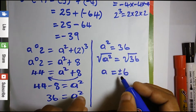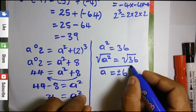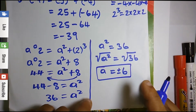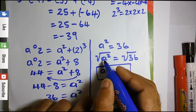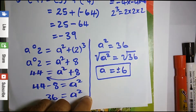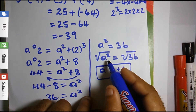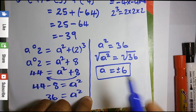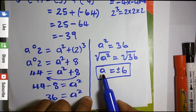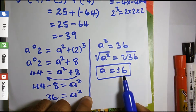Before we verify, note that the square root of a squared works because we ask: what number multiplied by itself gives a²? That's a times a, so the square root of a² is a. Similarly, the square root of 36 is 6.